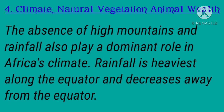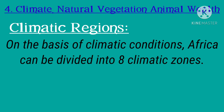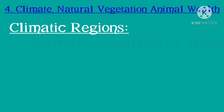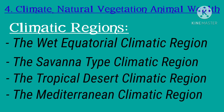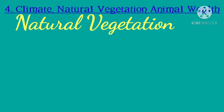The absence of high mountains and rainfall also play a dominant role in Africa's climate. Rainfall is heaviest along the equator and decreases away from it. Based on climatic conditions, Africa can be divided into eight climatic zones: the wet equatorial, the savannah type, the tropical desert, the Mediterranean, the temperate grassland type, the highland, the humid subtropical, and the dry winter subtropical climatic regions.